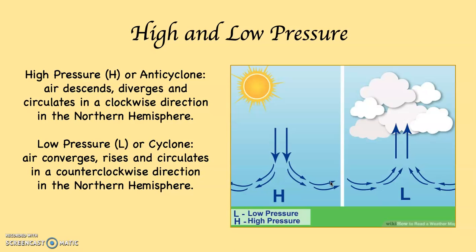In the Northern Hemisphere, the air would be circulating in a clockwise direction. And notice you can see the sun and the sky is clear, because high pressure systems are associated with clear skies and dry air.